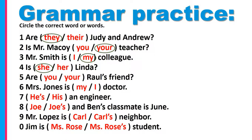Number five: Are you Raul's friend? The subject pronoun. Number six: Mrs. Jones is my doctor. Number seven: He's an engineer or his an engineer? Remember we have seen the pronunciation of he's and his – his comes from the throat, a glottal stop. But in this case it's he is: He's an engineer.